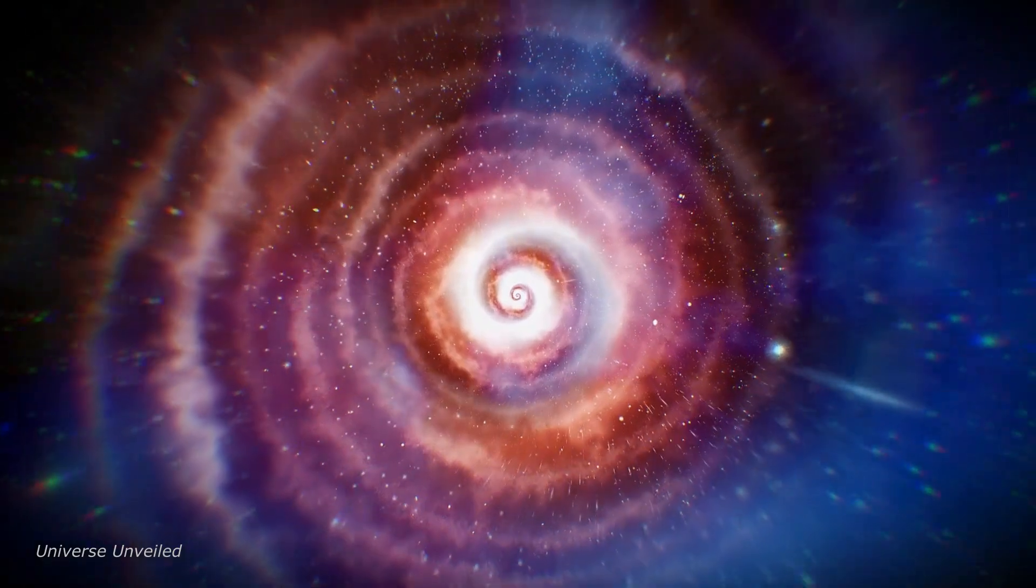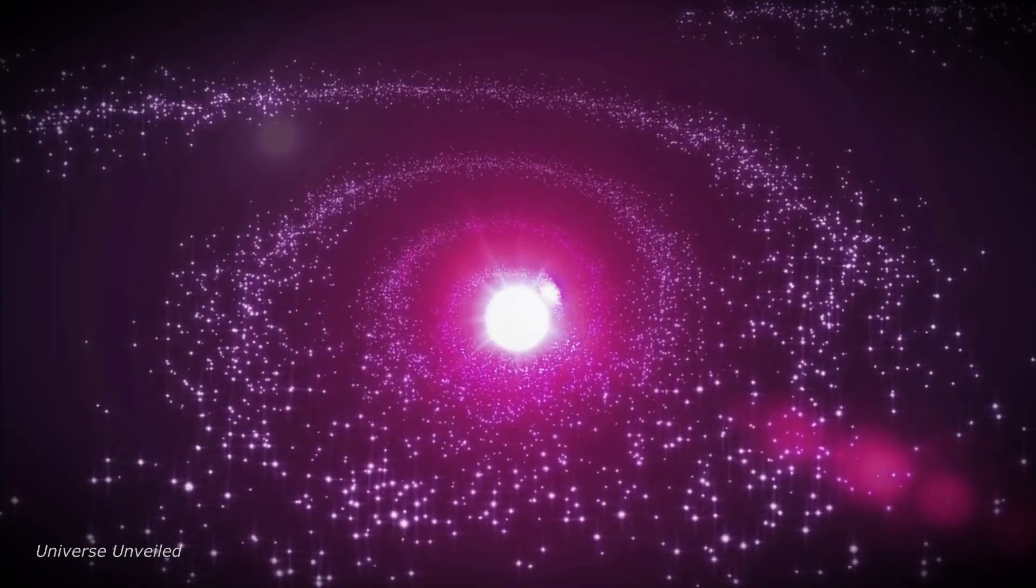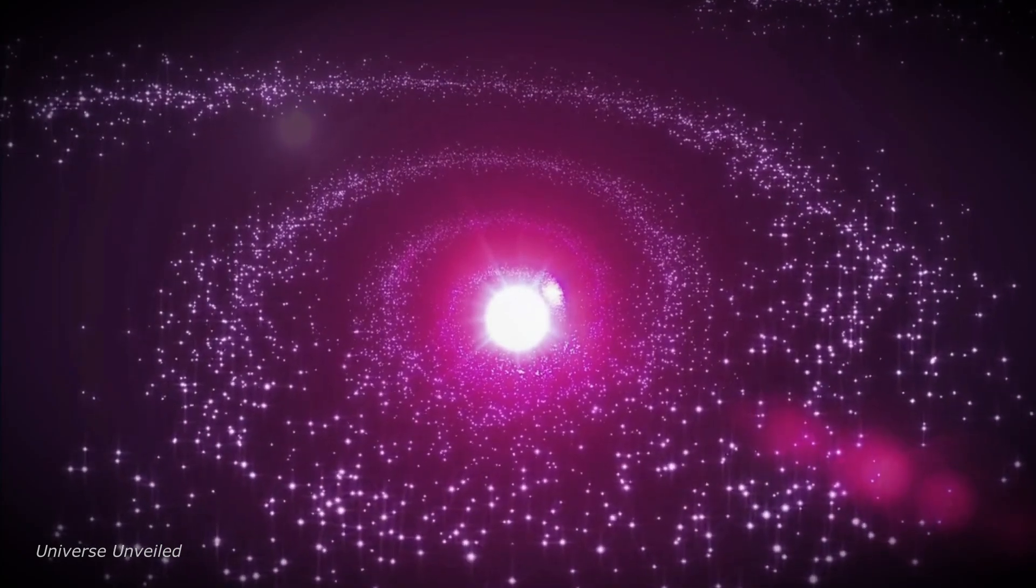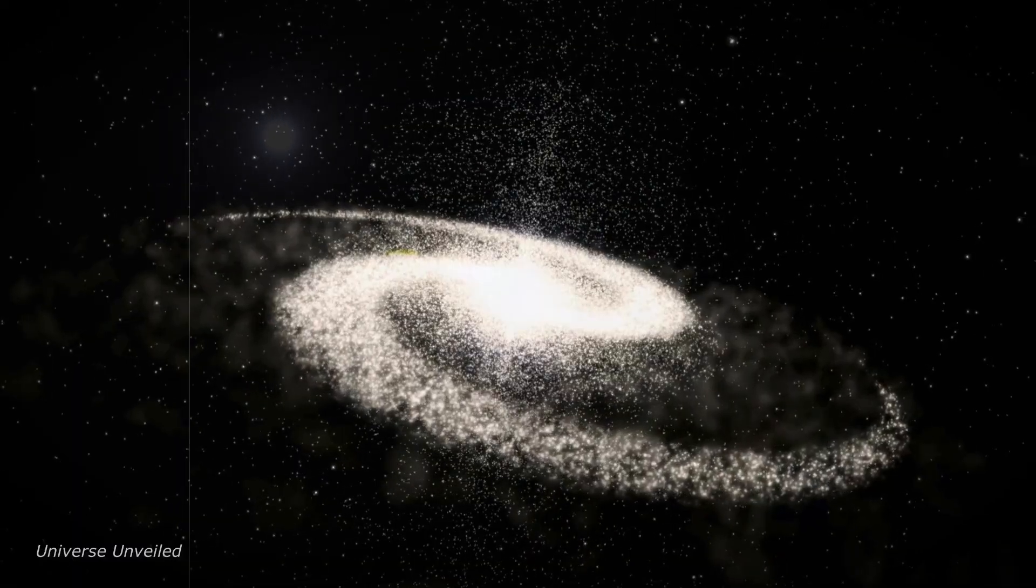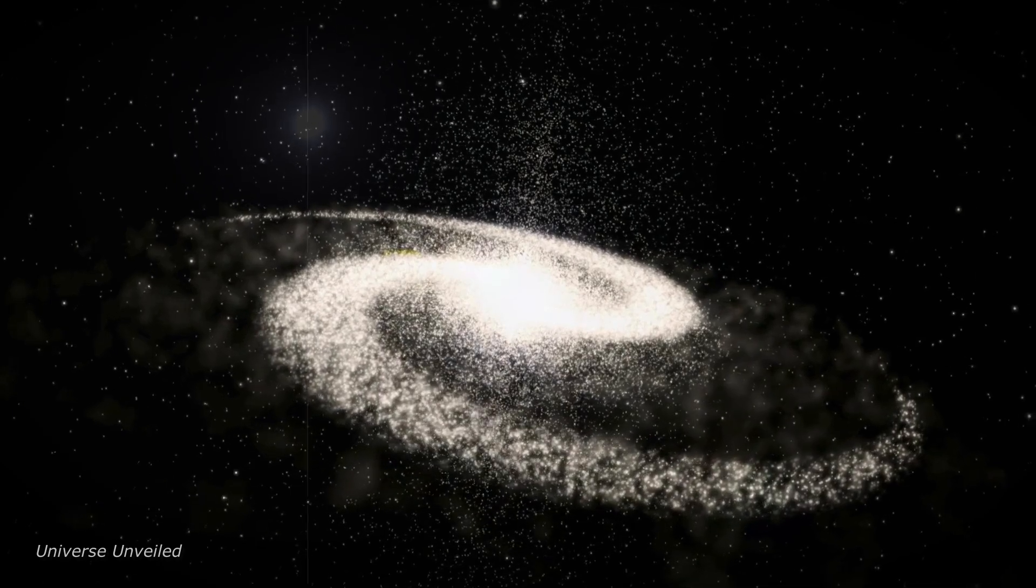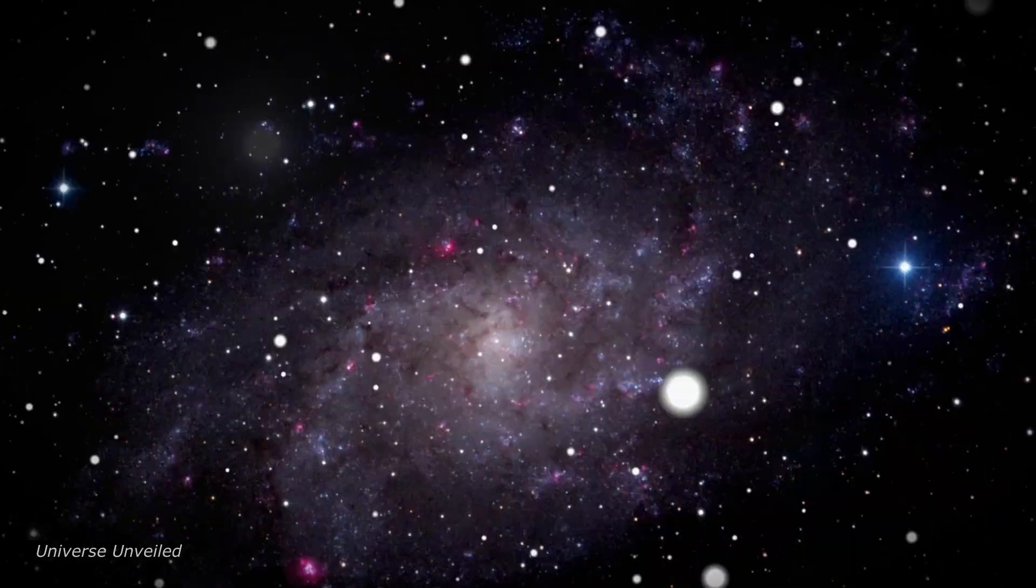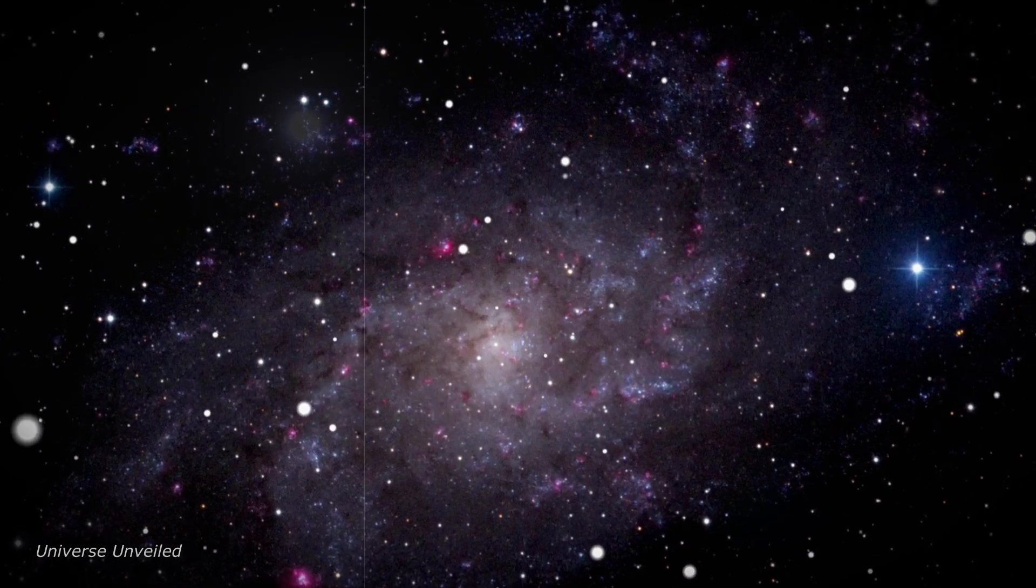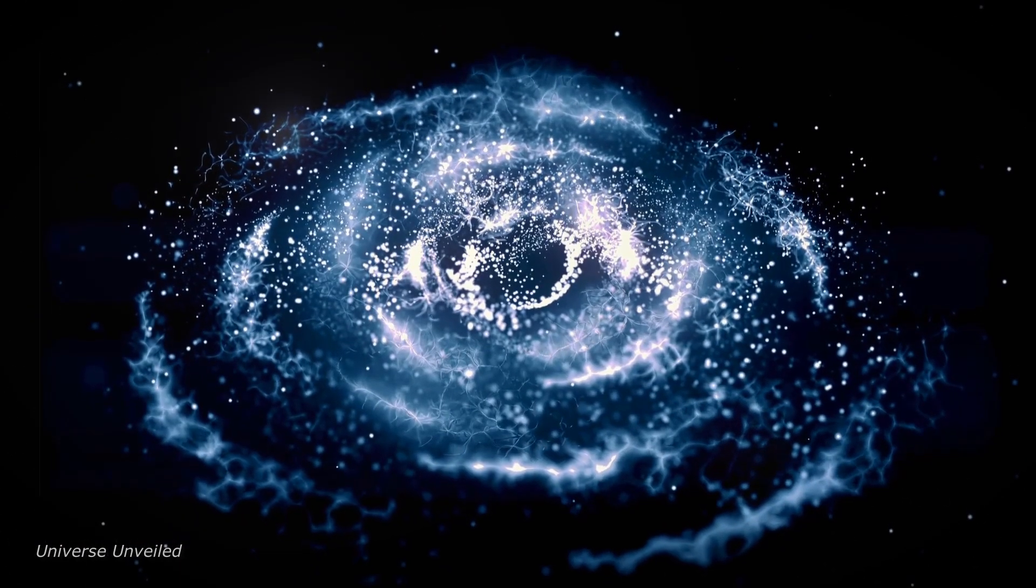The direct impact on our planet's environment from the galactic merger is expected to be negligible. Yet, the indirect effects of gravitational disturbances on Earth's orbit and the solar system's position in the galaxy could be significant, influencing the long-term stability of Earth's climate and orbital path. Though the future is uncertain, the survival of Earth and its inhabitants hangs in a delicate balance.